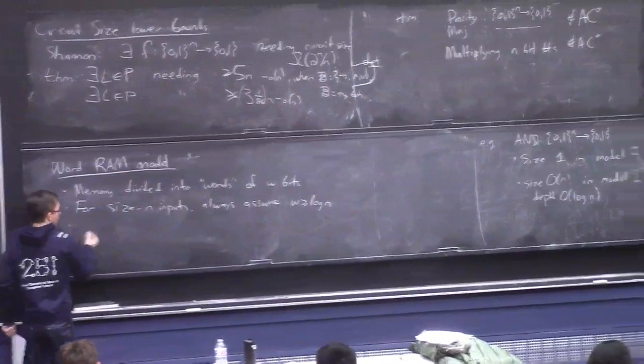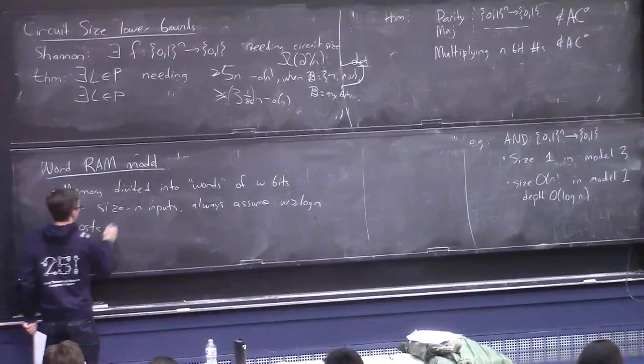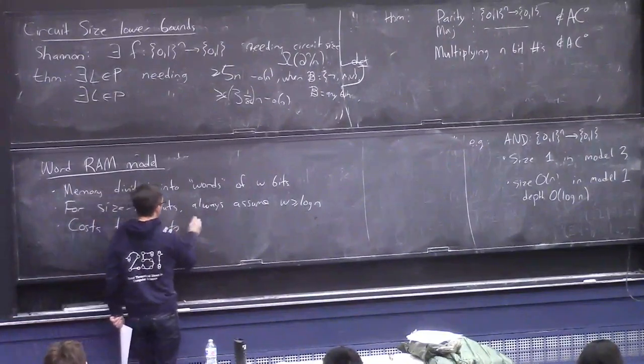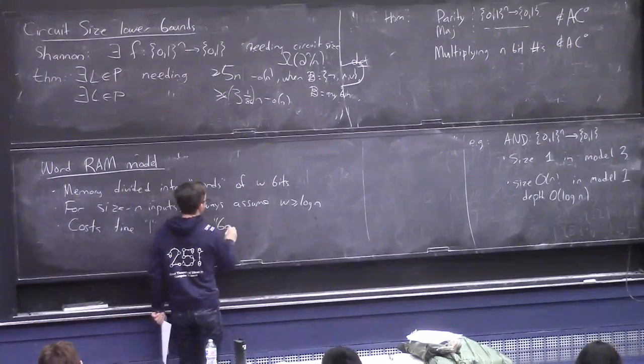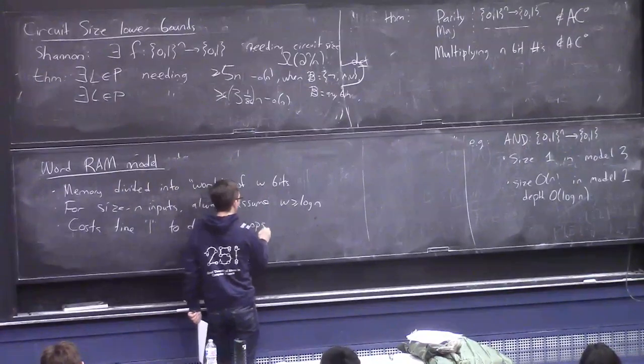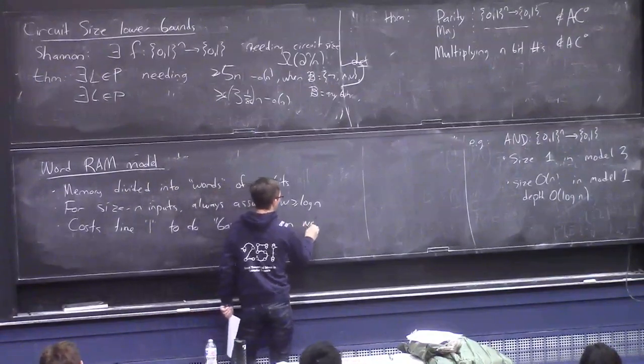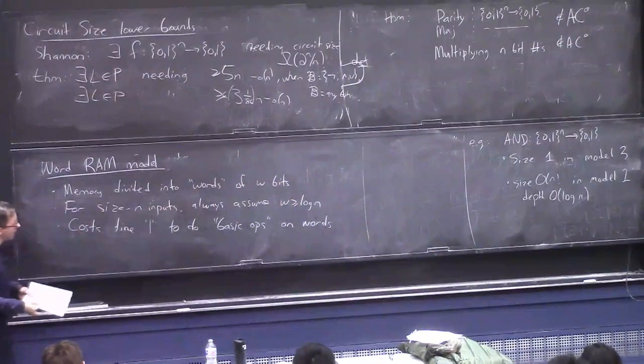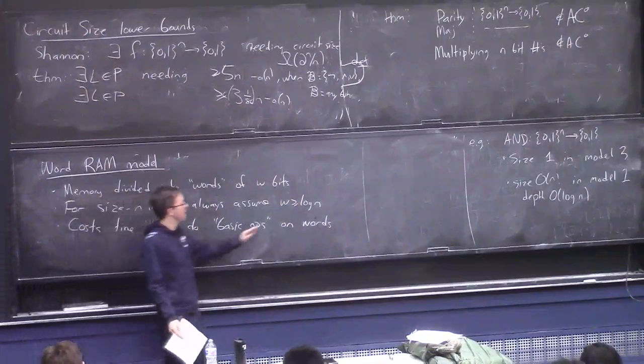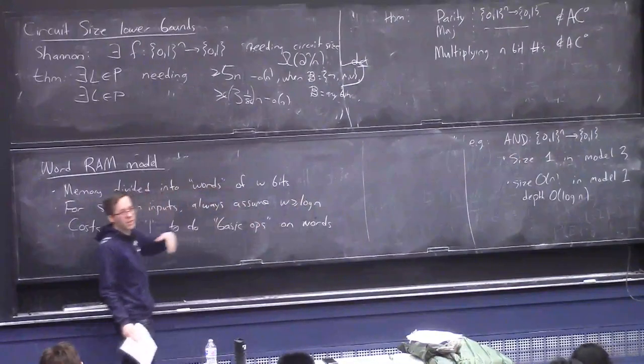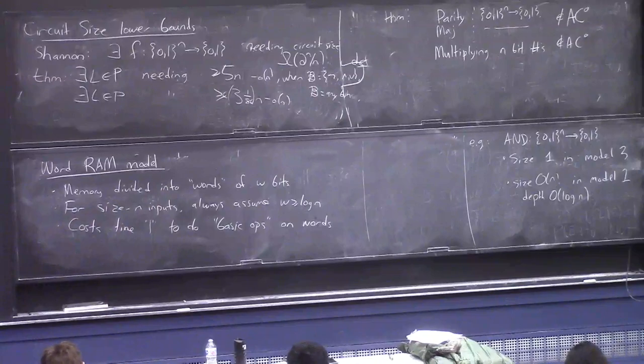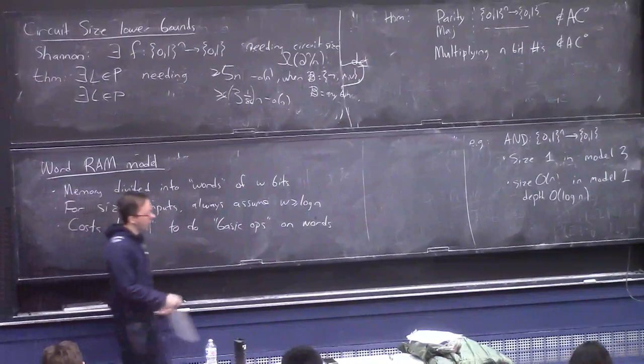And as I said, sort of the point of the model is that costs time one by fiat to do like a basic operation on words. And this is basically kind of how they do it in classical undergrad algorithms textbooks. They say like, OK, you can add two integers in time one because that's like a basic operation.